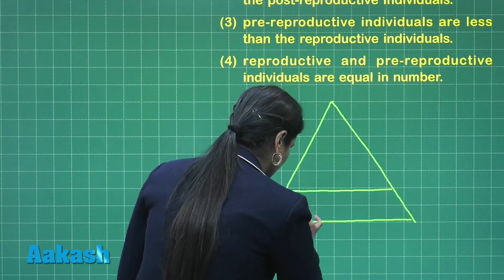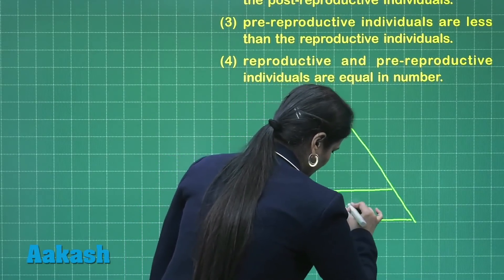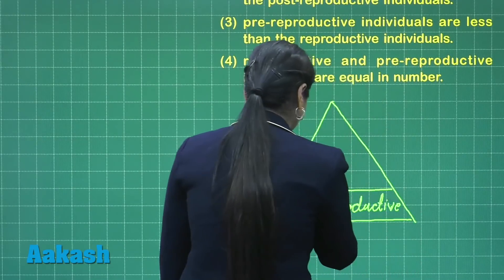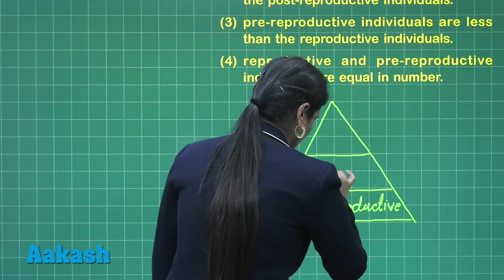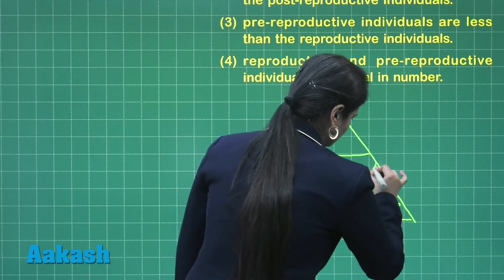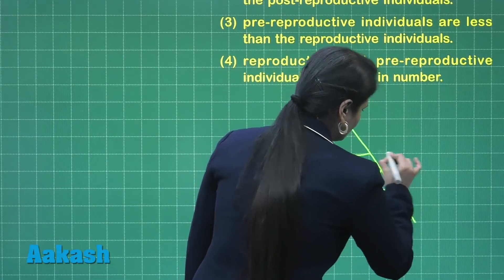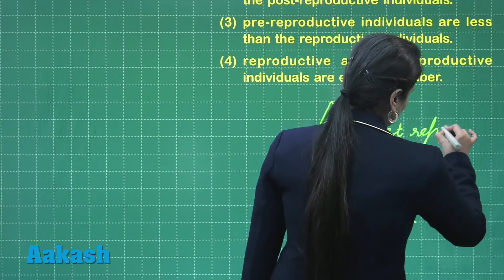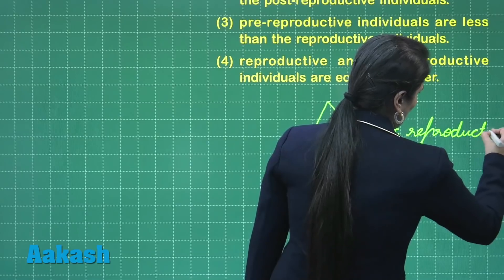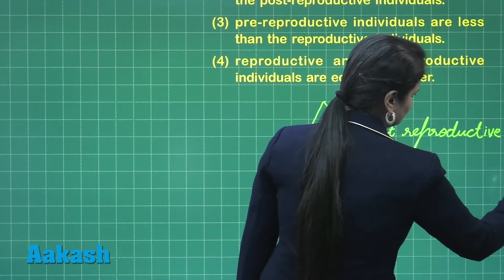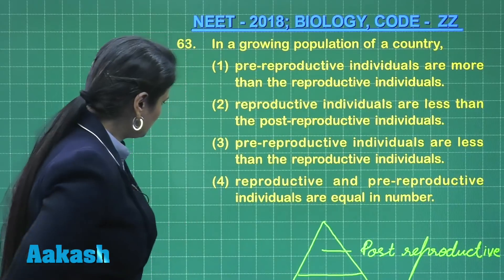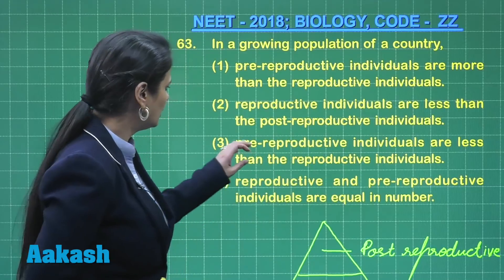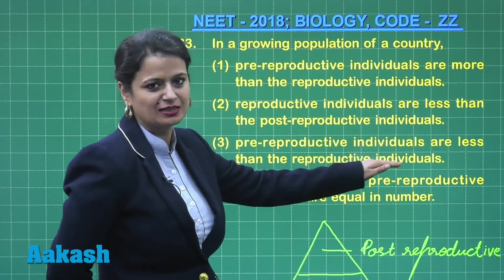In this condition, the maximum number of individuals are present in the pre-reproductive age group, a moderate number in the reproductive age group, and the least number in the post-reproductive age group. Now looking at the options: option four says reproductive and pre-reproductive individuals are equal in number — that is wrong.